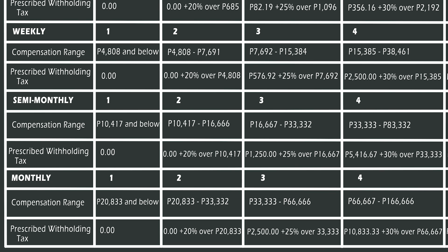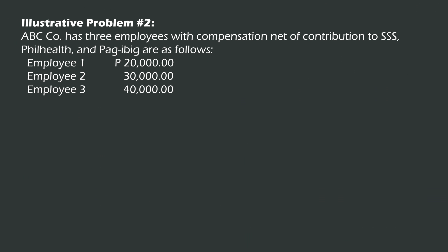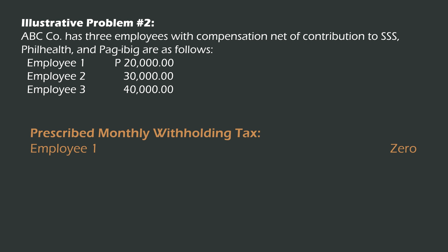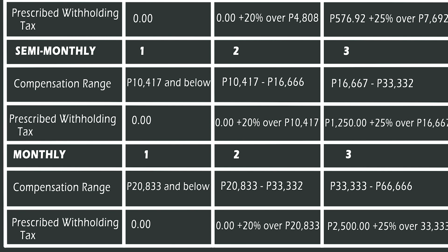For Employee 1, the taxable compensation is 20,000, which is within bracket number one. Based on the withholding tax table, we do not have any tax, so the prescribed withholding tax will be zero.